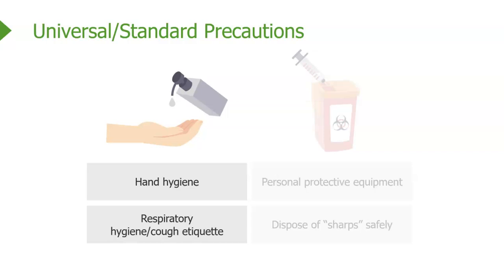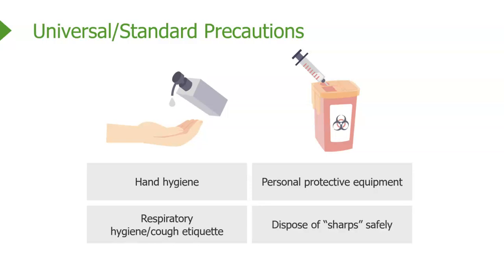The third piece of the four parts of universal standard precautions is personal protective equipment. Whatever is necessary depends on what kind of care is involved with the patient. You might need to wear gloves; you might need to wear a gown if it's going to get messy. Gloves are essential when you're going to come in contact with any type of body fluid. The fourth piece is to dispose of sharps safely. Those are the four pieces of universal standard precautions — the basic minimum level of care expected for anyone involved in patient care.